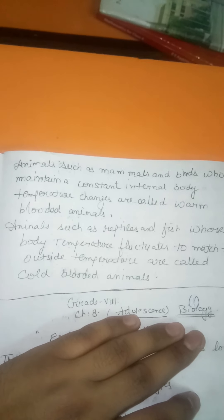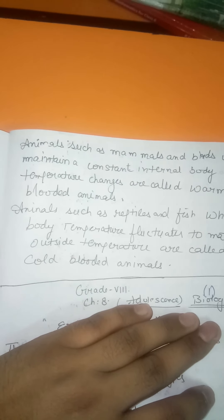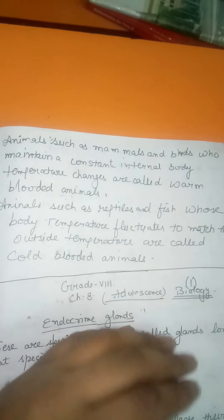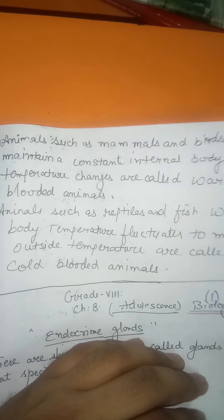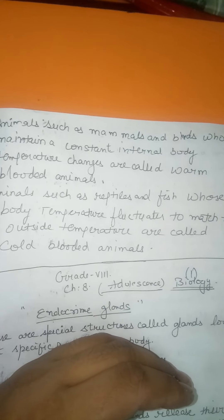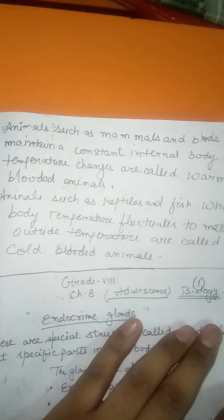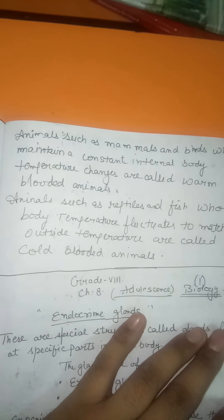Temperature also affects animals. Animals are grouped into cold-blooded and warm-blooded animals. Warm-blooded animals, such as mammals and birds, can maintain a constant internal body temperature regardless of the surroundings. Cold-blooded animals change their body temperature according to the surrounding environment.